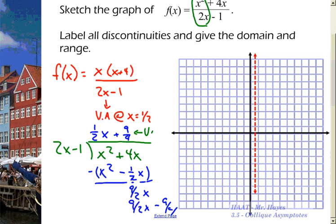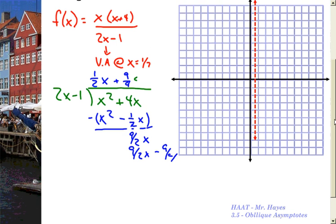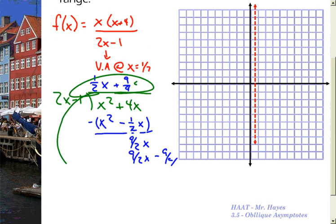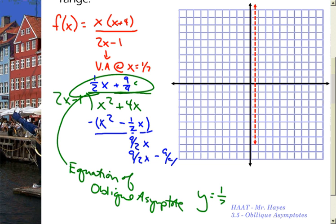So this right here, I'm going to rewrite it down here a little bit lower. This right here is my equation of our oblique asymptote. That's going to be y equals 1 half x plus 9 fourths, which is about 2 and a quarter.